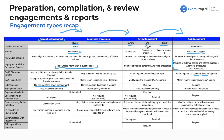For review engagements, understanding internal control is required if you are doing interim financial statements for a non-issuer or an issuer, but not required for an overall review of a non-issuer. It is of course required for audits. For errors and irregularities: preparations address obvious errors; compilations address obvious errors found while reading financial statements; reviews address only errors discovered through inquiry and analytical procedures; and an audit is designed to provide reasonable assurance of detection of material misstatements.